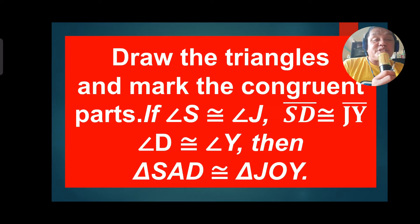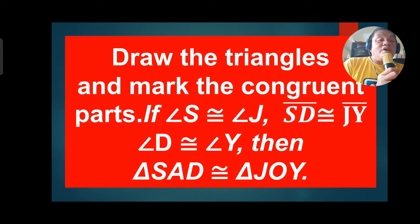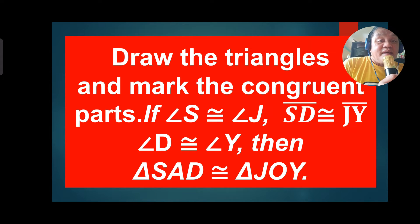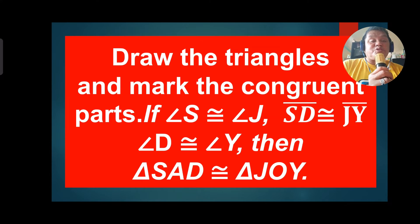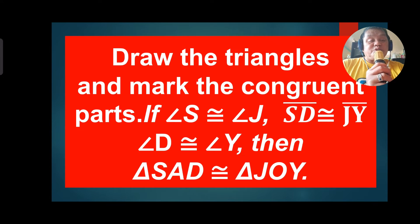Let's go to 'What's More.' Draw the triangles and mark the congruent parts. If Angle S is congruent to Angle J, Side SD is congruent to Side GY, and Angle D is congruent to Angle Y, then Triangle SAD is congruent to Triangle JAY. We are going to draw Triangle SAD and Triangle JAY.